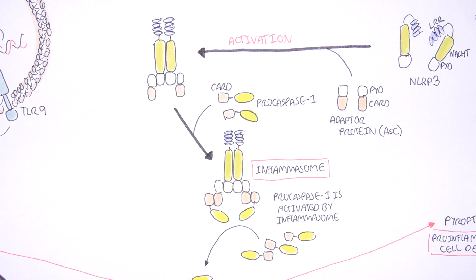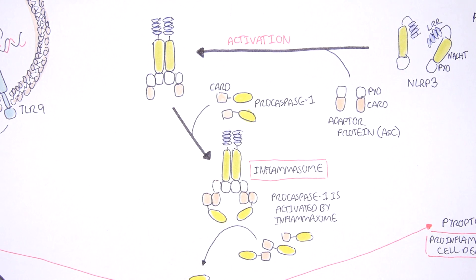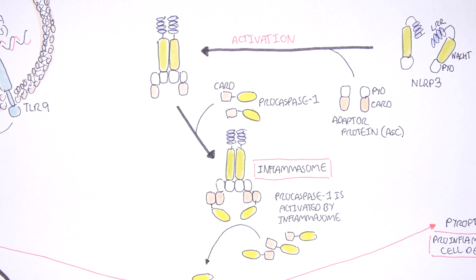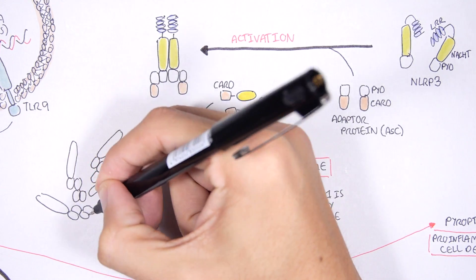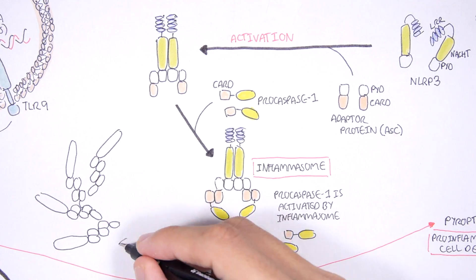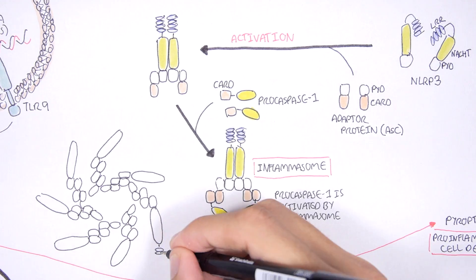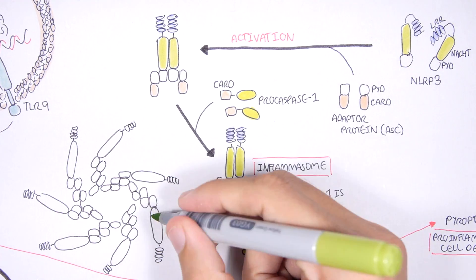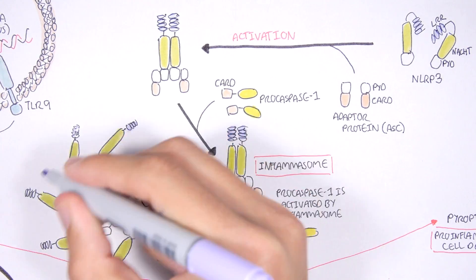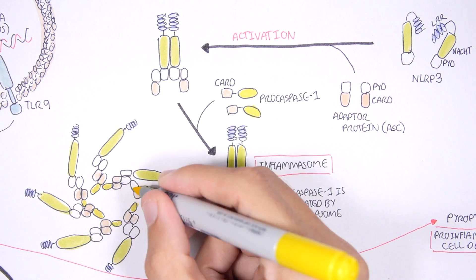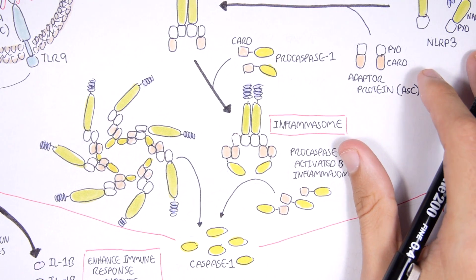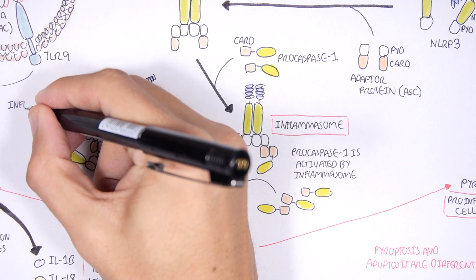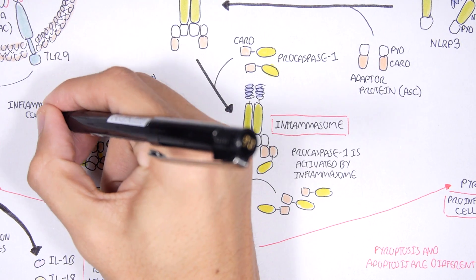The NLRP3 inflammasome actually forms a ring-like structure made up of seven NOD-like receptors as well as the adapter proteins — not just two monomers as in a simplified diagram. This inflammasome complex results in the proteolytic cleavage of pro-caspase-1, leading to active caspase-1, as indicated.